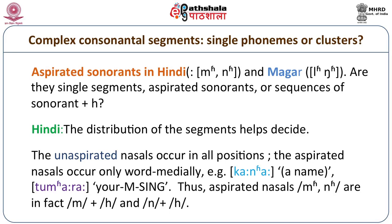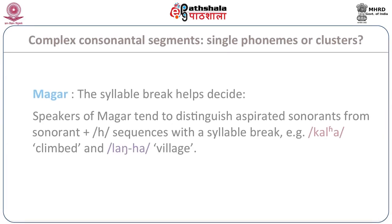They are not found to occur word-initially or word-finally. Quite clearly then, it can be concluded that the aspirated nasals and aspirated lateral, because of having very restricted distribution, are actually sequences of two consonants: the nasals and the lateral /m/, /n/, /l/ plus /h/. When the two come together, we have the aspirated nasals and laterals.